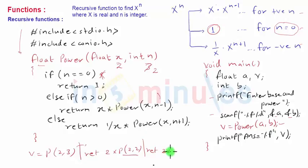Return will have a command like this, it will be return 2 into power of 2 comma 1. Again is a recursive call over here, from here function will be called back.